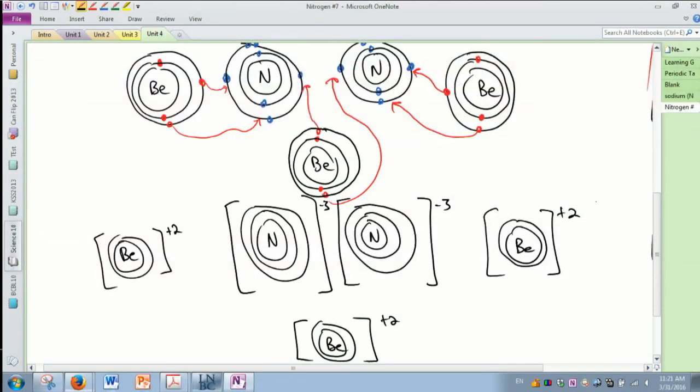What is Be3N2? Be3N2 is beryllium nitride, that's what we actually call it. What is it in real life? I have no idea what it does or what it is. I'm sure you could google it. All right, it's a lot of work: one, one, two, three, four, five, six, seven, one, two, three, four, five, six, seven. There we go.